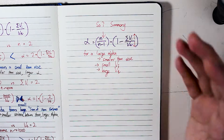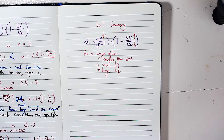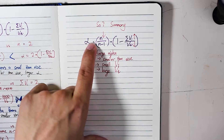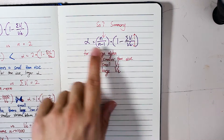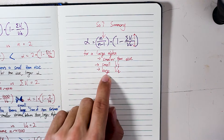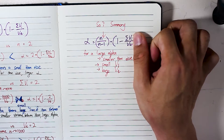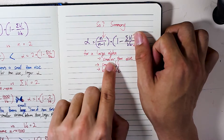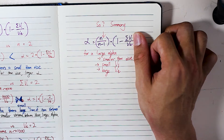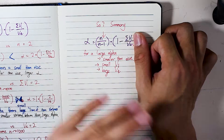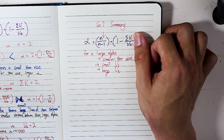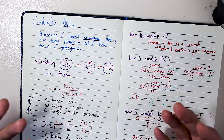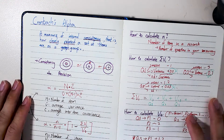To summarize: Alpha equals n divided by n minus 1, times 1 minus the sum of vi divided by vt. To get a high alpha, you need: n to be small — fewer survey questions; sum of vi to be small — low variance within each item; and vt to be large — high total variance across the sum of items. A large alpha — typically above 0.7 — is considered good enough by most literature. That's the basics of Cronbach's Alpha and how it's used in surveys to determine the reliability of results.